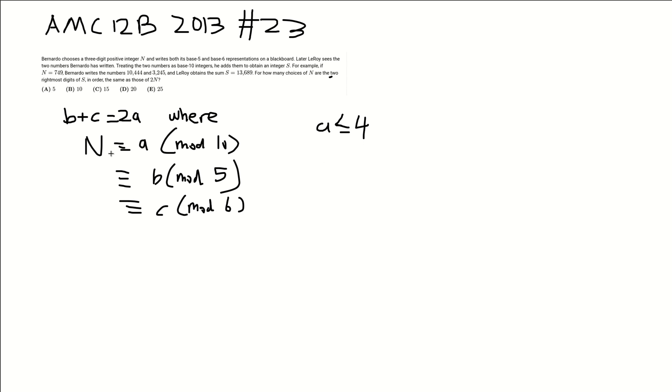But now let's rewrite a mod 10 in an equivalent form. So a mod 10 just by definition means that n is equal to 10k plus a. But then we can write this as 5 times 2k plus a. Because a is less than or equal to 4, this implies that n is congruent to a mod 5. Which implies if we look here, n is congruent to b mod 5. This implies that a is equal to b. And then when we plug b is equal to a into here, we get c plus a is equal to 2a. So this implies that a is equal to b is equal to c.